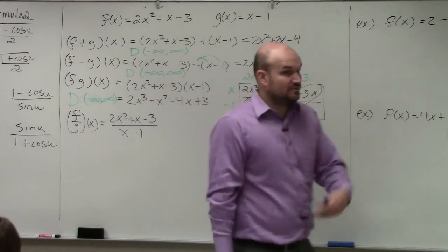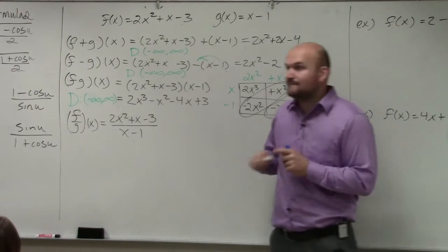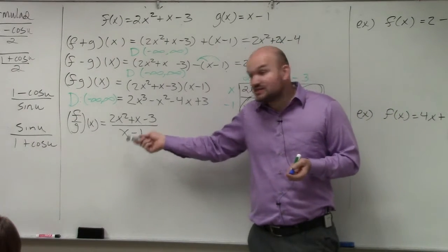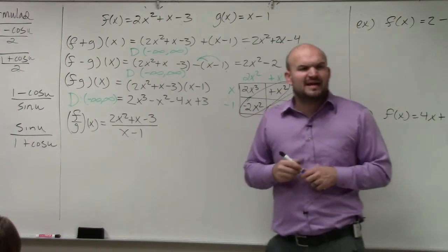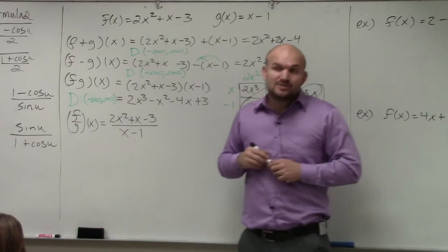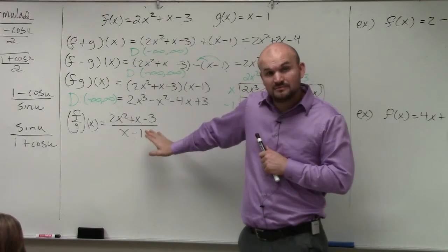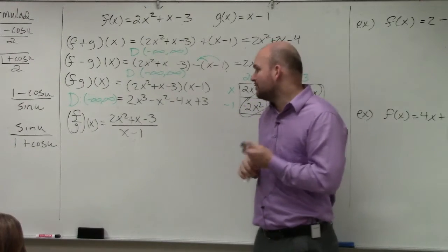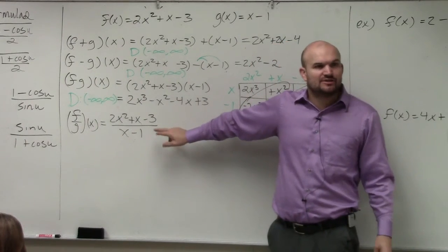Now, to simplify this, we could divide this, couldn't we? We could divide this by using what? Synthetic division, since the denominator is a binomial. We could also do this by long division, correct? We could also look to see if we can simplify this by factoring. You always want to look into factoring. But before I even go any farther, my domain: what value, what number cannot be in my domain?